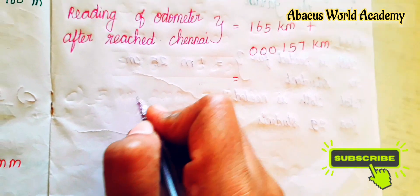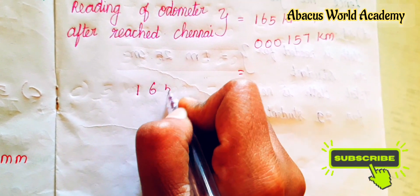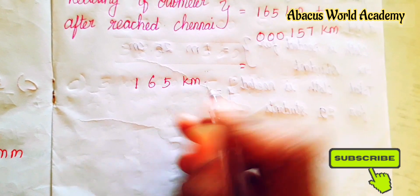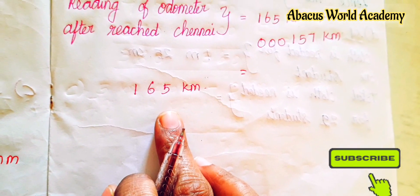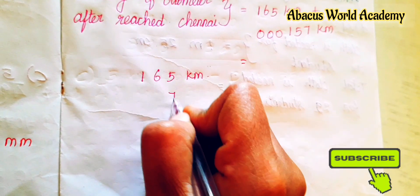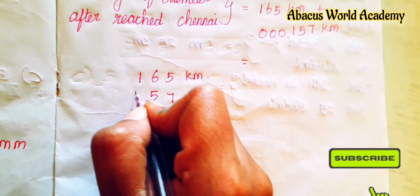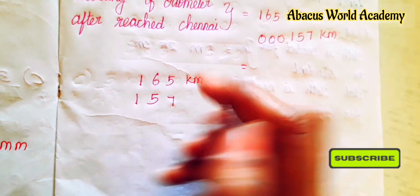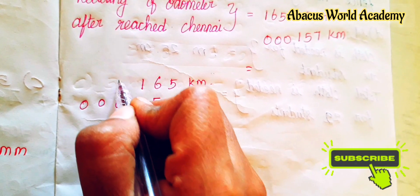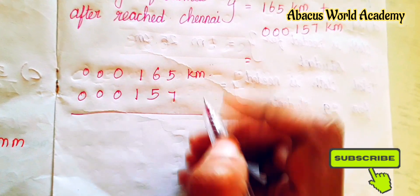Students, first add. So 165 km plus 000157 km. Place values: ones place 7, tens place 5, hundreds place 1, then 0, 0, 0. So 3,000. So 0, 0, 0, 0 km.